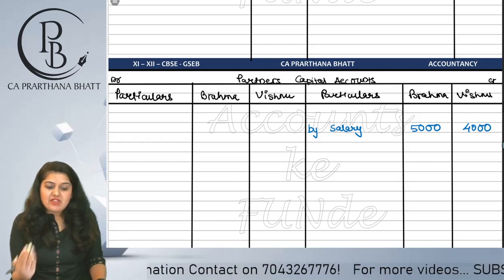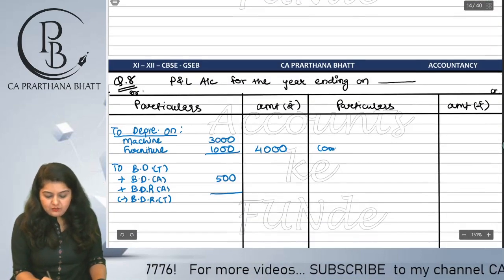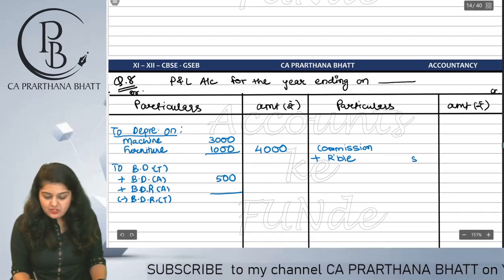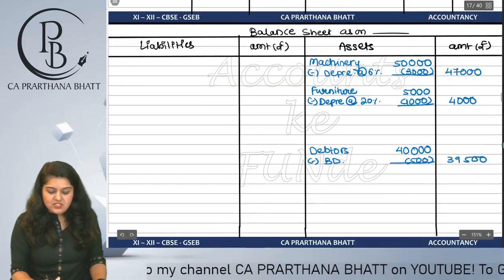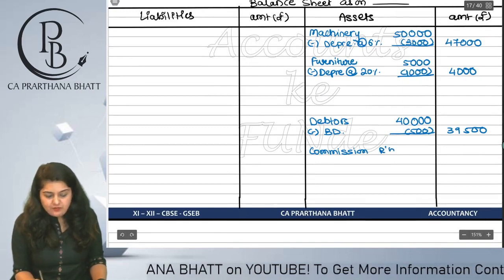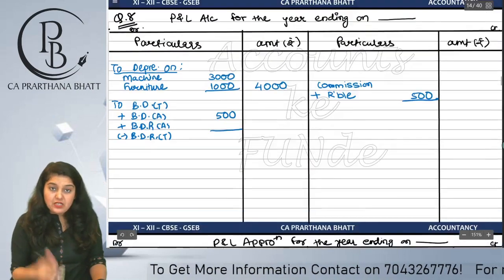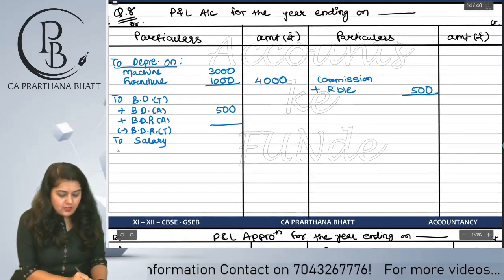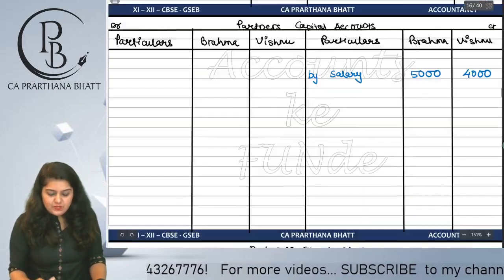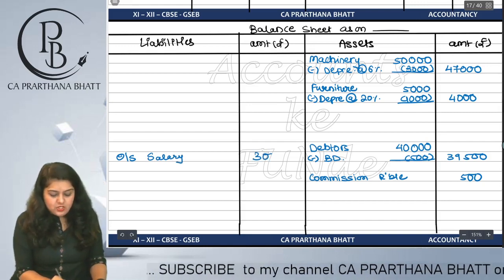Commission of 500 is receivable - we are yet to receive it. So in the profit and loss account, commission gets a plus of 500, making it 5,500 total. In the balance sheet on the asset side, we record income receivable - commission of 500. Then outstanding salary of 3,000 - we are yet to pay this. In P&L, salary gets 3,000 more, and in the balance sheet it appears as outstanding salary liability of 3,000.